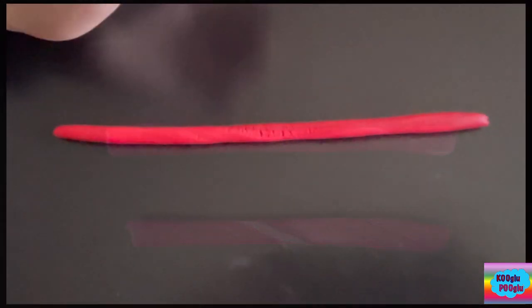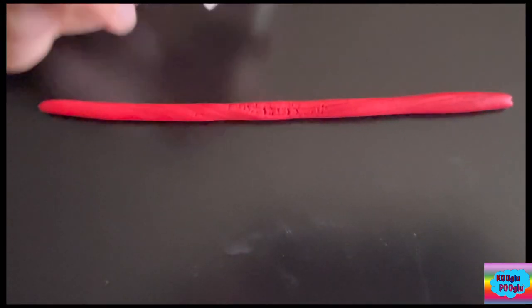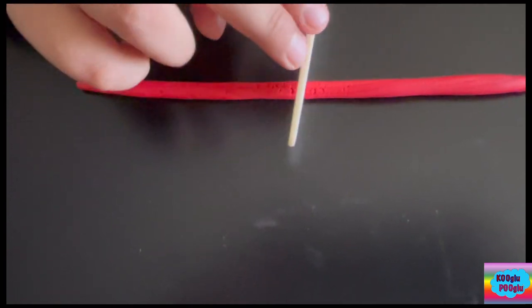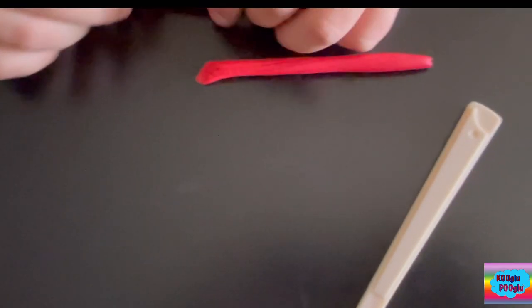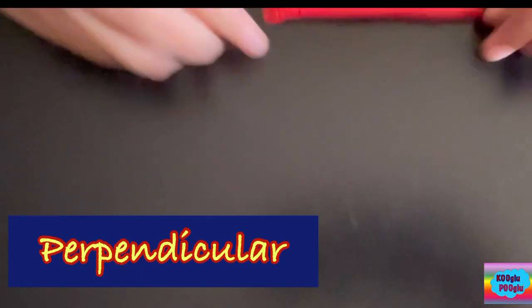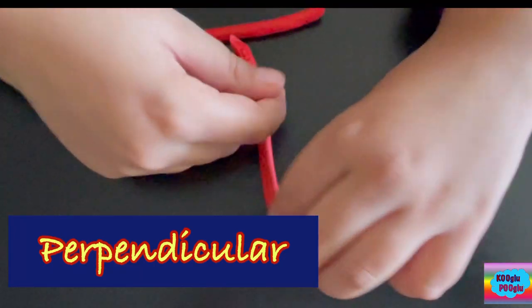We're going to cut our Twizzlers, not Twizzlers, modeling clay in half. One, two, three. Here, we're going to make a parallel line. One and two.